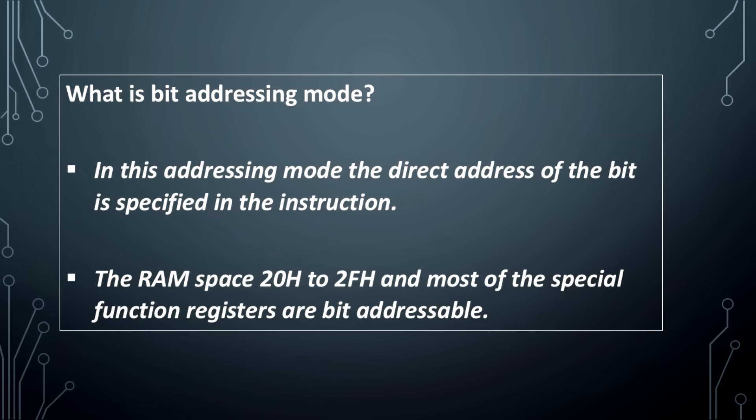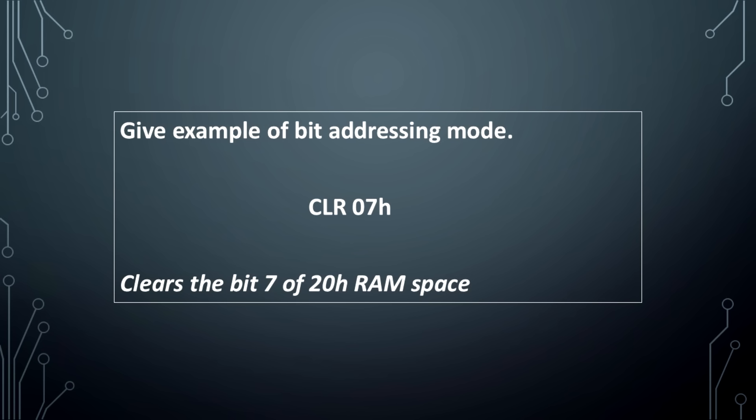In the bit addressing mode, the direct address of the bit is specified in the instruction. The RAM space 20H to 2FH and most of the special function registers are bit-addressable. Example: CLR 07H — this clears bit 7 of the 20H RAM space.